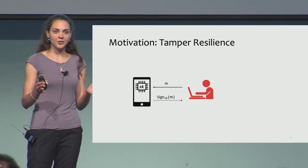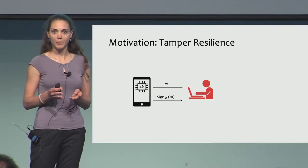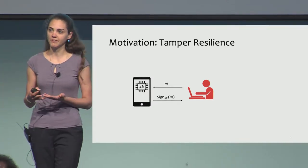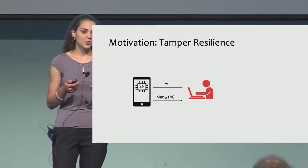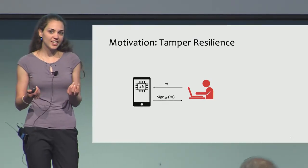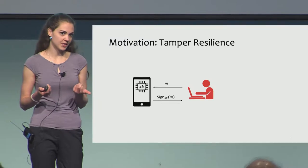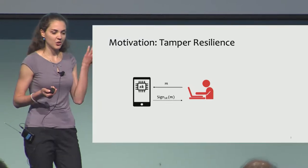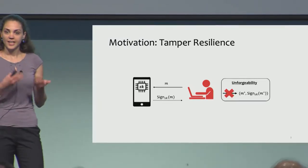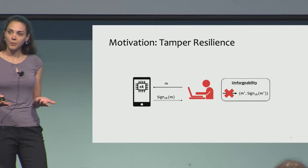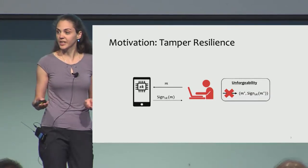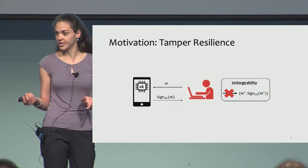Imagine that you have a small memory device that performs some cryptographic functionality. That means that some secret key is stored in the memory of this device. On this example you can see digital signatures, and the security property of digital signatures guarantees that no one can forge a signature.